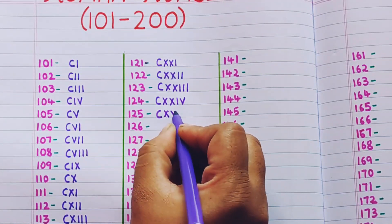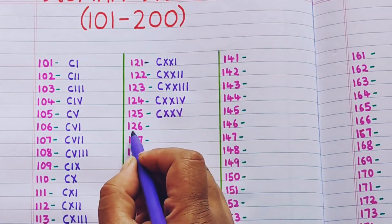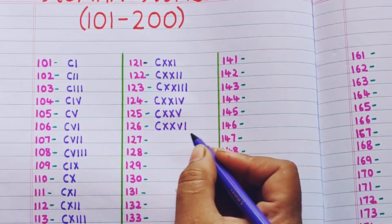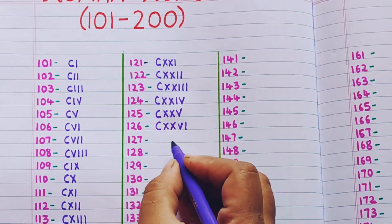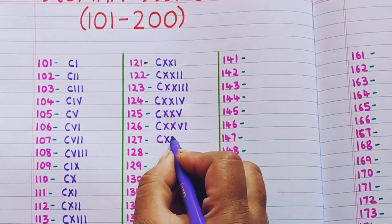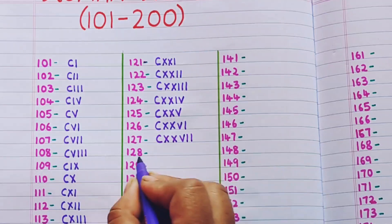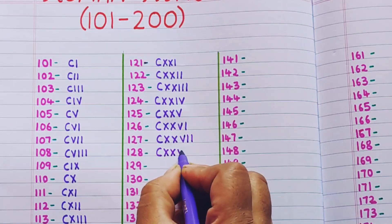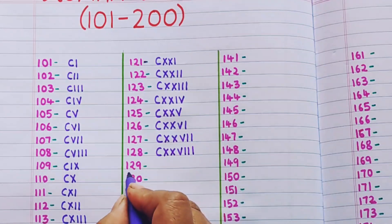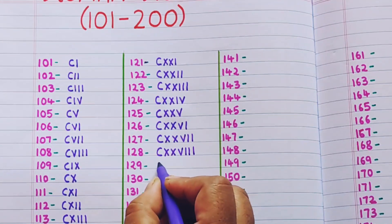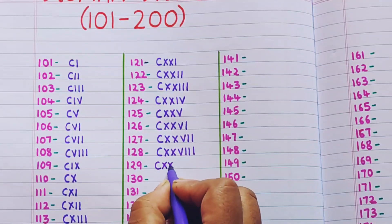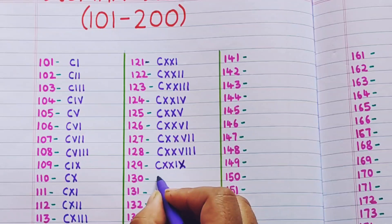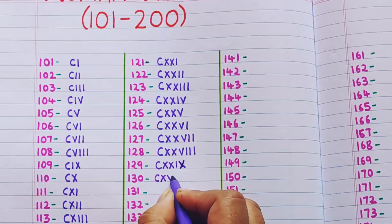125 is CXXV, 126 is CXXVI, 127 is CXXVII, 128 is CXXVIII, 129 is CXXIX, 130 is CXXX.